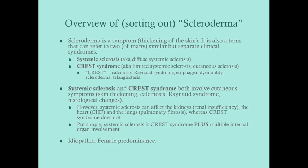For the USMLE, you're responsible for two scleroderma syndromes that include thickening of the skin: systemic sclerosis and CREST syndrome. There are other types — linear scleroderma, scleroderma coup de sabre — but those are very low yield. Systemic sclerosis and CREST syndrome are high yield for the USMLE.